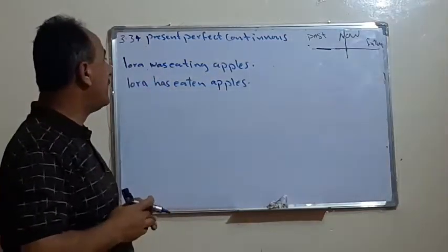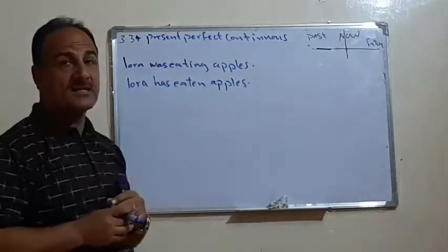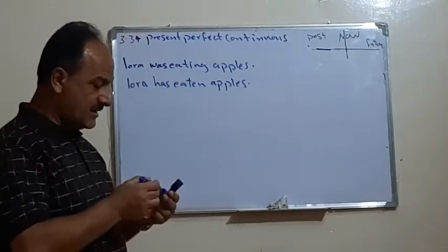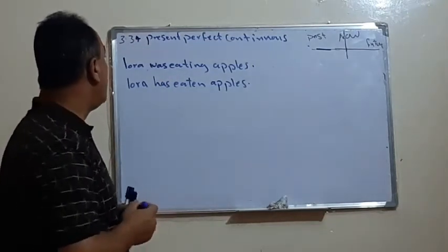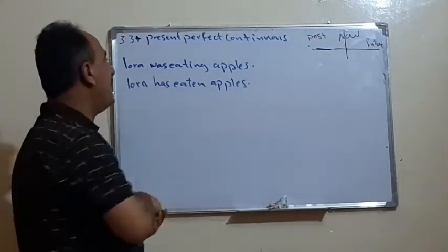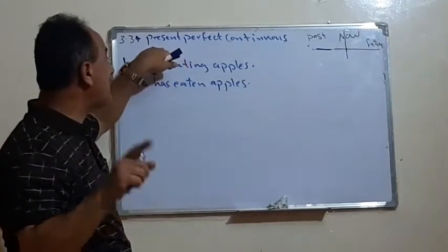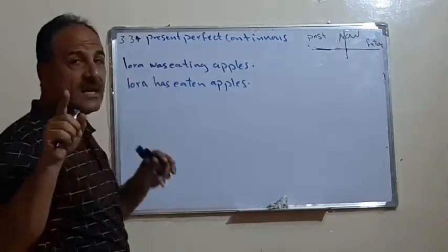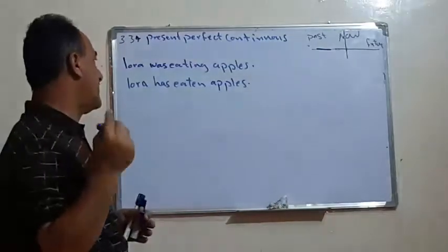I think this Present Perfect Continuous we are going to discuss, which is the last tense among the C group. The first sentence, if we say, or it is said, in fact, the Present Perfect Continuous is a combination of two tenses, as we'll see.